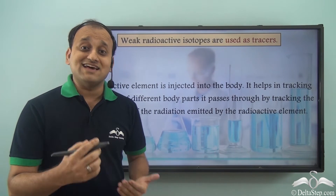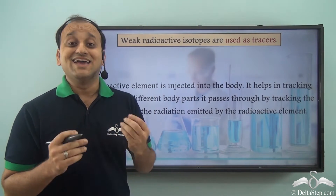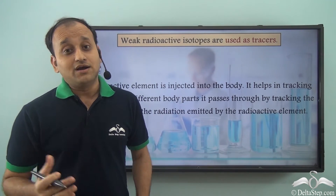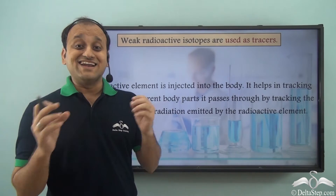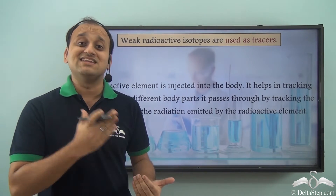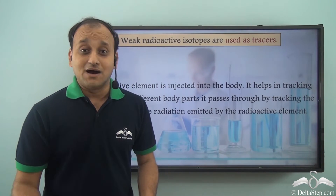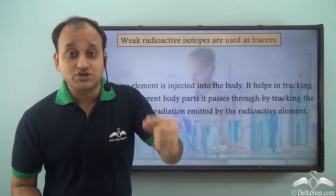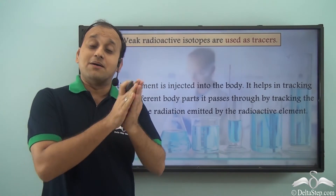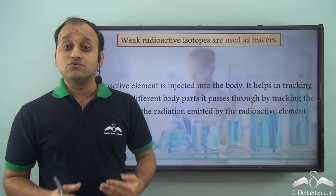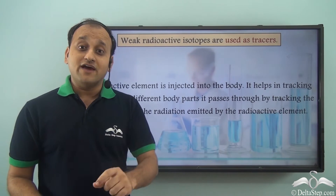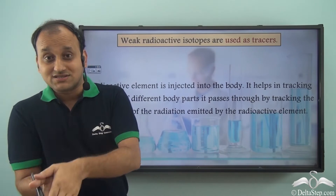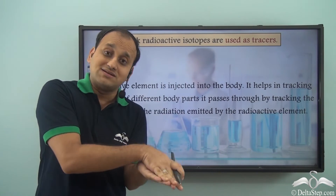The radioactive element travels throughout the body and emits radiation. Since beta and gamma radiation can penetrate our skin and come out, we can track the position of the radioactive element inside the body. Based on the amount of radiation detected, we can know the status of the particular organ where the radioactive element is currently positioned.